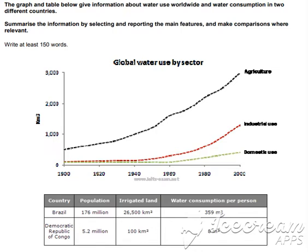Throughout the century, the largest quantity of water was used for agricultural purposes, and this increased dramatically from about 500 cubic kilometers to around 3000 cubic kilometers in the year 2000.